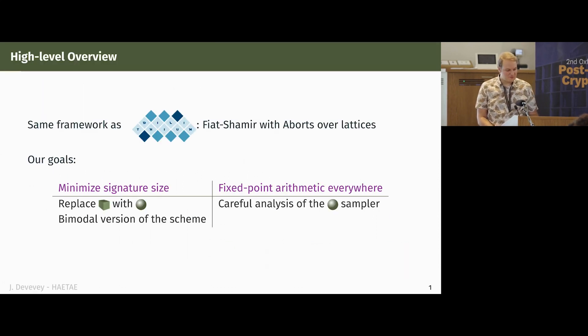To give you a brief overview of the scheme, we basically started where Dilithium left off—the Fiat-Shamir with aborts over Euclidean lattices framework. While Dilithium had a goal which was to make it easy to implement, we aimed for something else, which was trying to minimize the signature size.